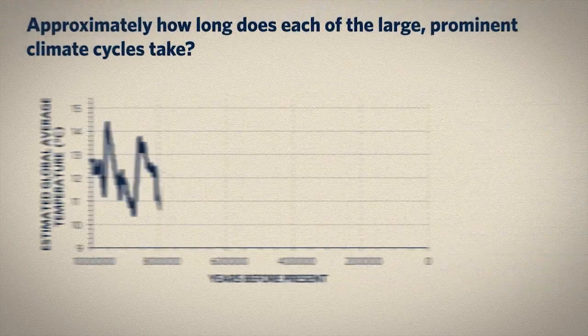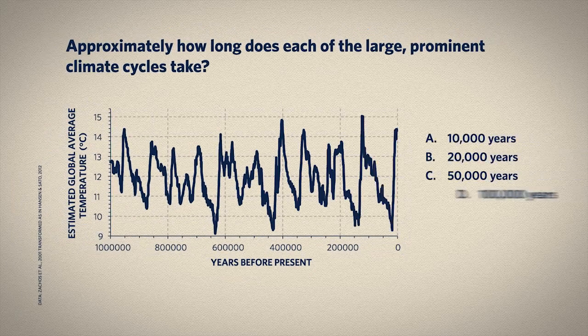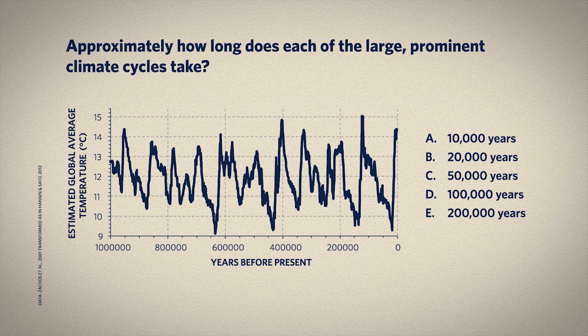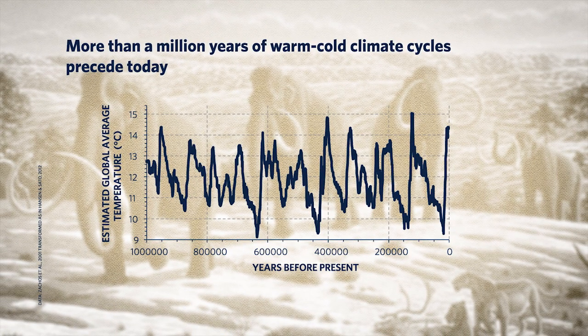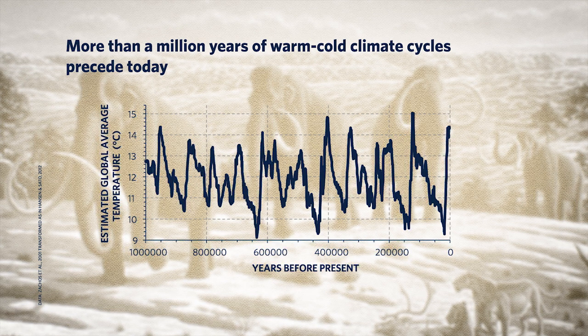Let's try a question. During this million years of time, we see that these large climate cycles happened. About how long does each of these cycles last? There's certainly some variability here, but the large amplitude cycles in climate each last around 100,000 years. For example, there are about two of these big cycles within the last 200,000 years.